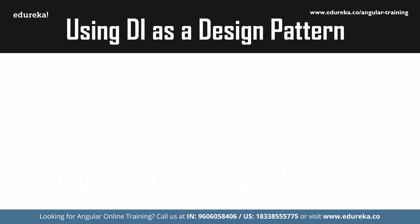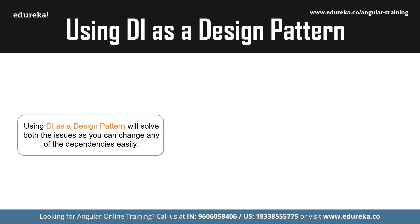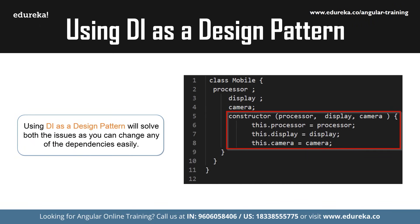When you make use of dependency injection, the class will not define its dependencies but will acquire them from external sources. We can rewrite the code for the mobile class — in this case the dependencies are no more created by the mobile class, but it takes them from elsewhere. As you can see, processor, display, and camera are passed as parameters to the constructor rather than being instantiated within the constructor itself.